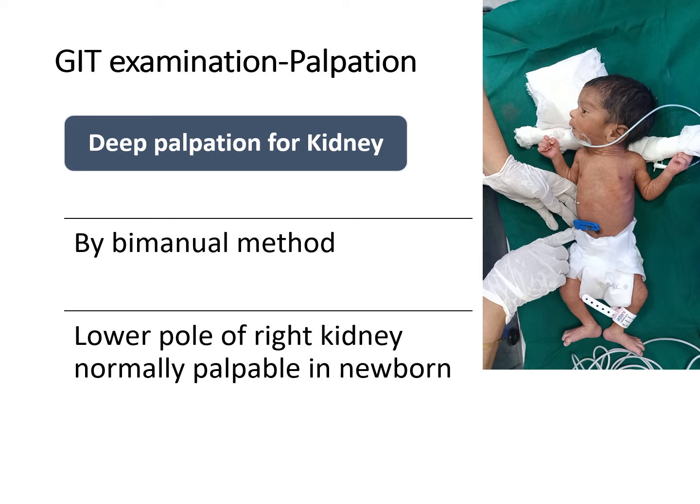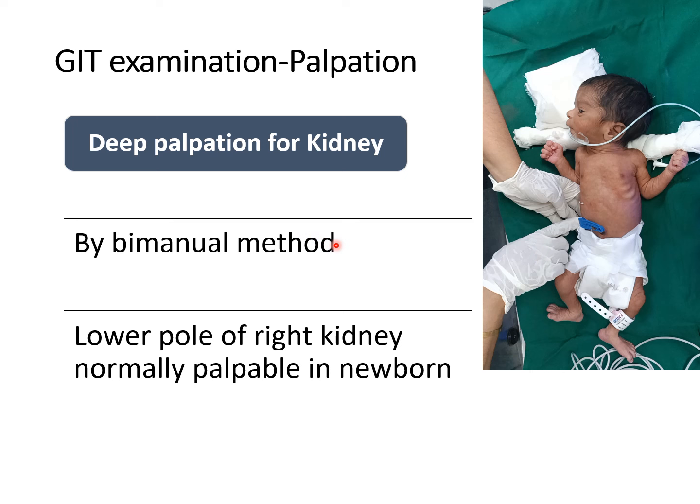Palpation for the kidney should be done by the bimanual method. We have to keep the left hand behind the back and the right hand over the abdomen just near the umbilicus. We should push the left hand forward and try to feel the lower pole of the right kidney, which is normally palpable in the newborn. The left kidney is impalpable except if the baby has any congenital kidney malformation.